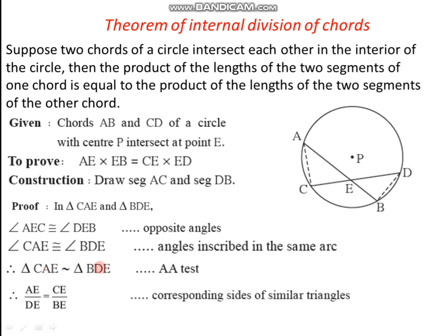The corresponding side to AE is DE, giving us AE divided by DE. We also take side CE, whose corresponding side is BE, giving CE divided by BE. As these are corresponding sides of similar triangles, AE/DE equals CE/BE. Now if we cross multiply, we get AE into EB equals CE into ED — which is exactly what we wanted to prove.